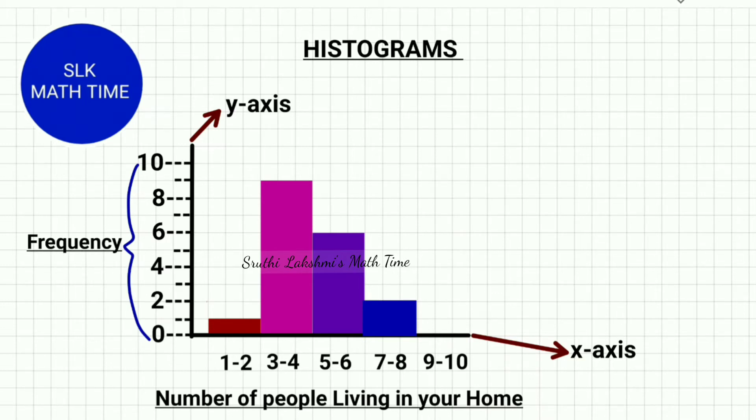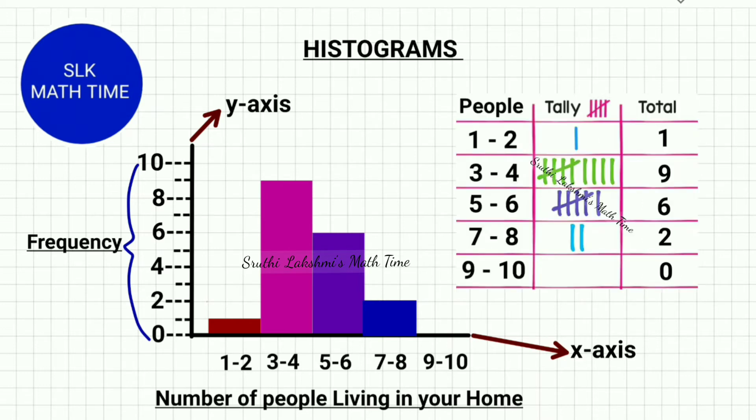So as you see, this histogram shows the number of people living in your home. So 10 students were asked how many people, including yourself, live in your house? So their answers were recorded on a tally chart.